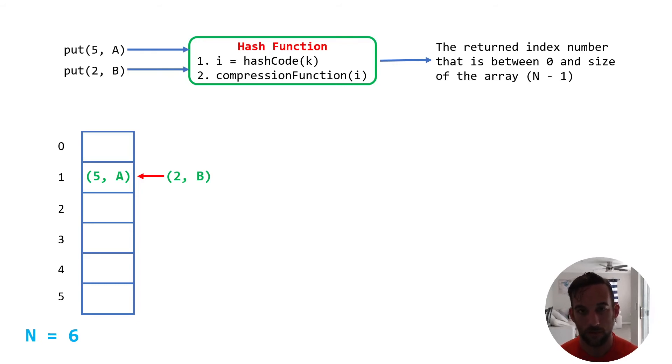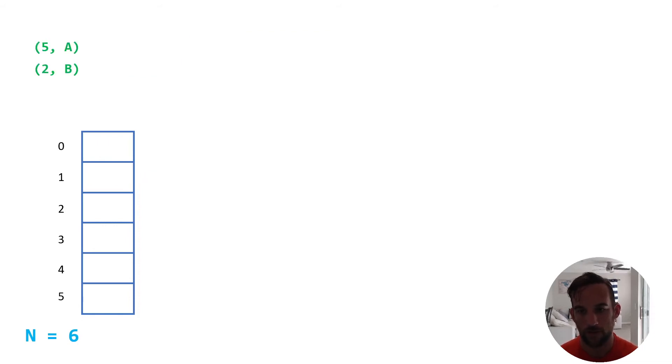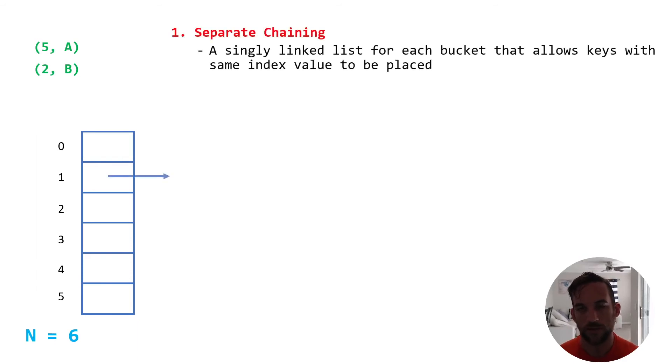So a topic of discussion that could be its own video is how to deal with collisions. Now, there are a couple ways. So again, we have the same key value pairs we just used. The first one, or there's several ways, but I'm going to talk about two of them. So the first one is called separate chaining. Now, what this means is that, like we just said, we have a singly-linked list for each bucket.